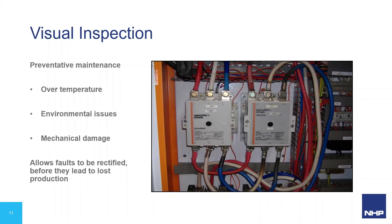A periodic inspection of contactors and other switchgear within their enclosure can be used for preventative maintenance. Visually checking for signs of overheating, environmental issues or mechanical damage can allow for rectification of an issue prior to becoming a fault, which would lead to loss of production.